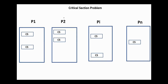If any process — for example, process P2 — is executing in one of its critical sections, then no other cooperating process is allowed to enter its critical section. For example, if process P1 wishes to enter its critical section, it should not be allowed and should wait until process P2 leaves its critical section. No two processes can execute in their critical sections at the same time.